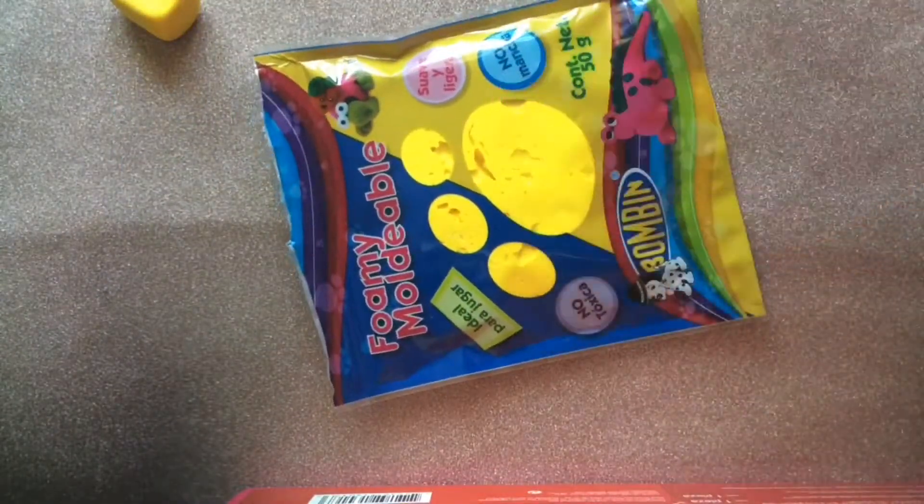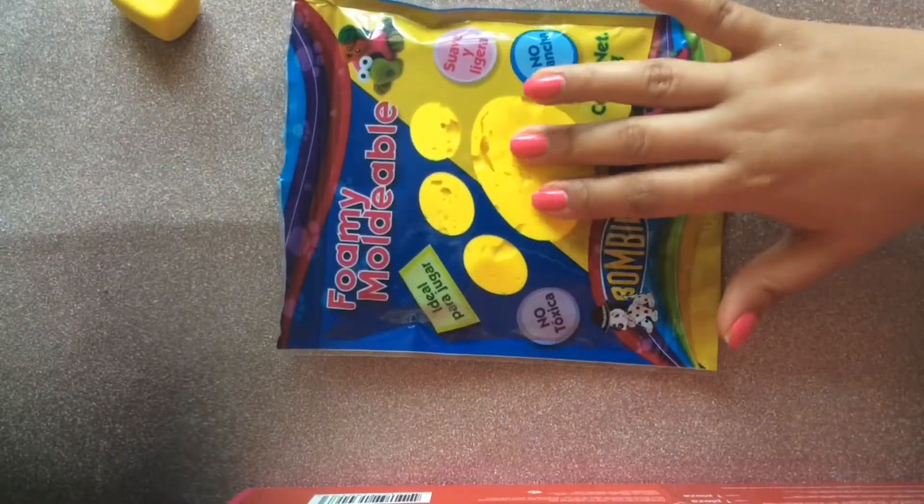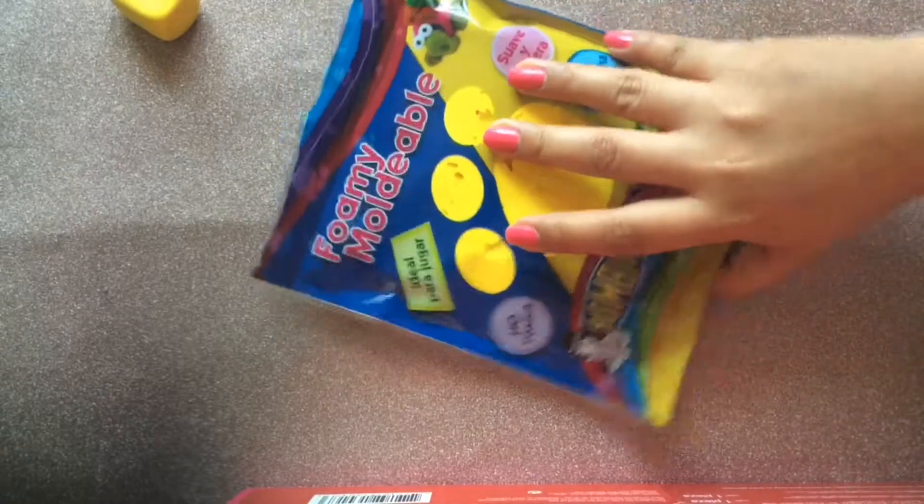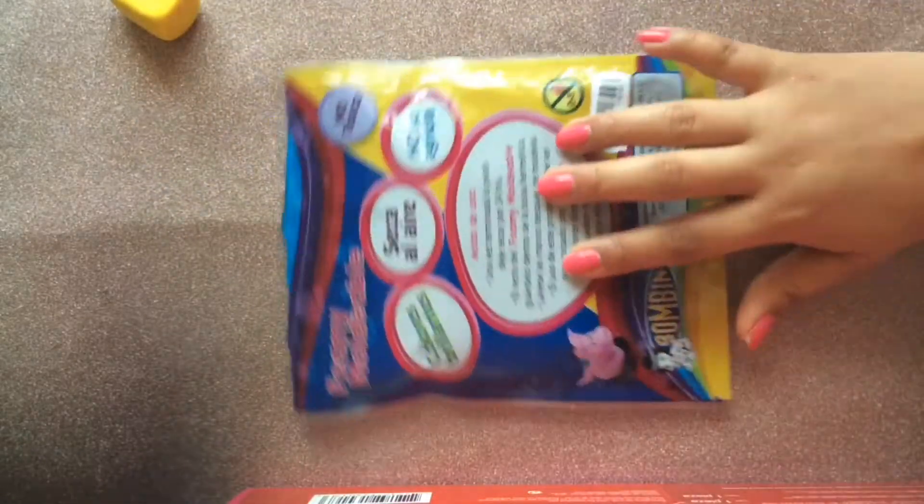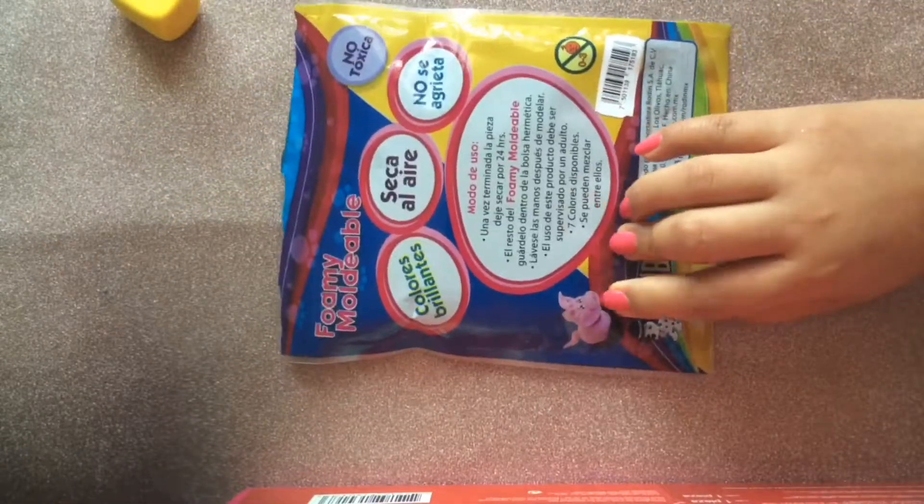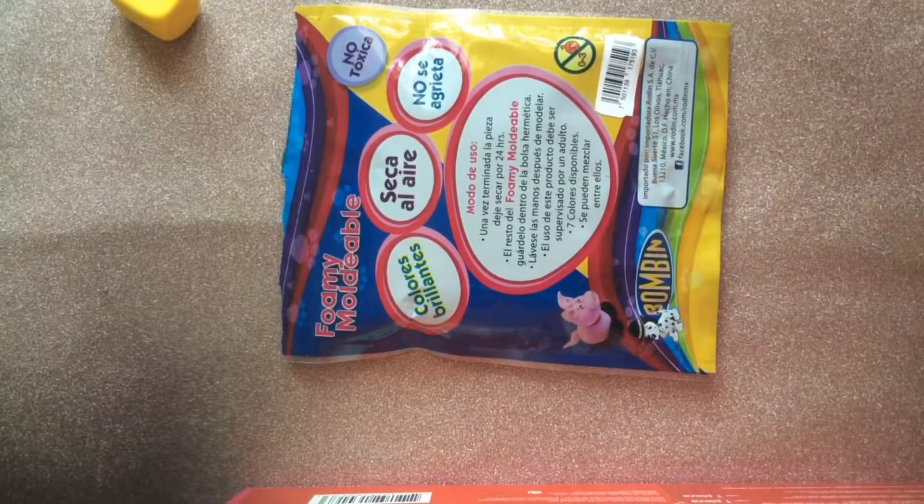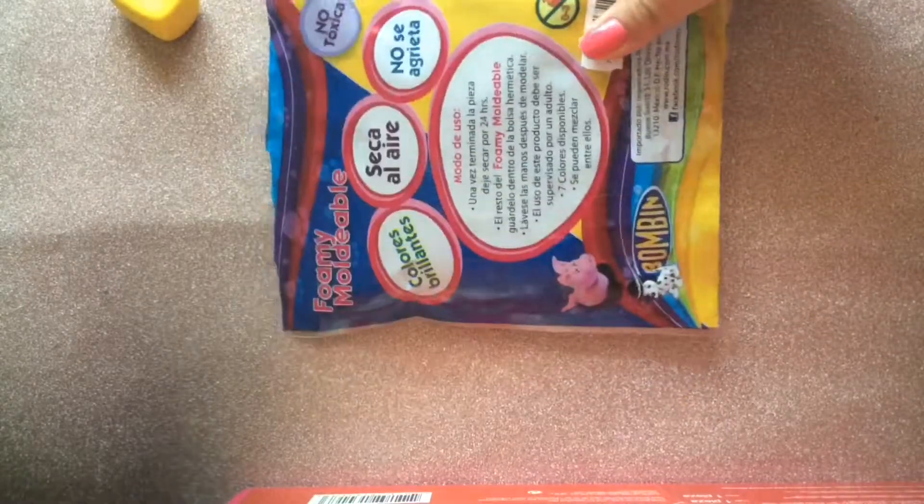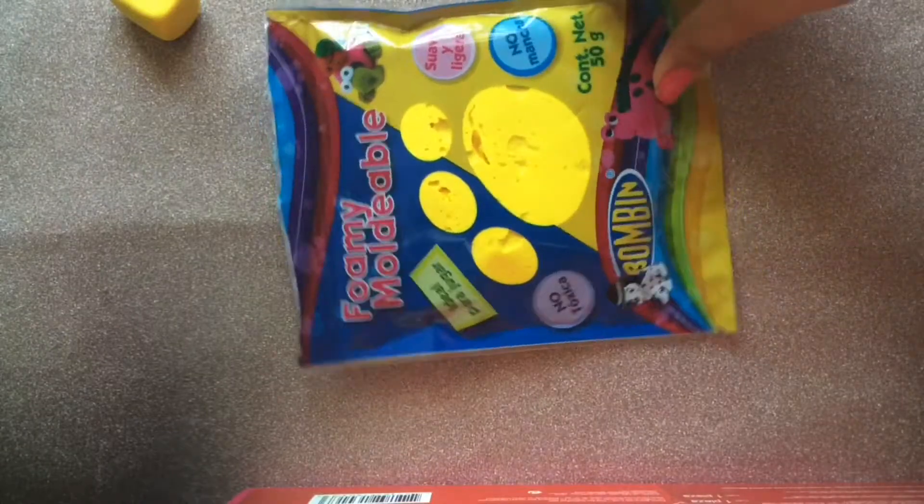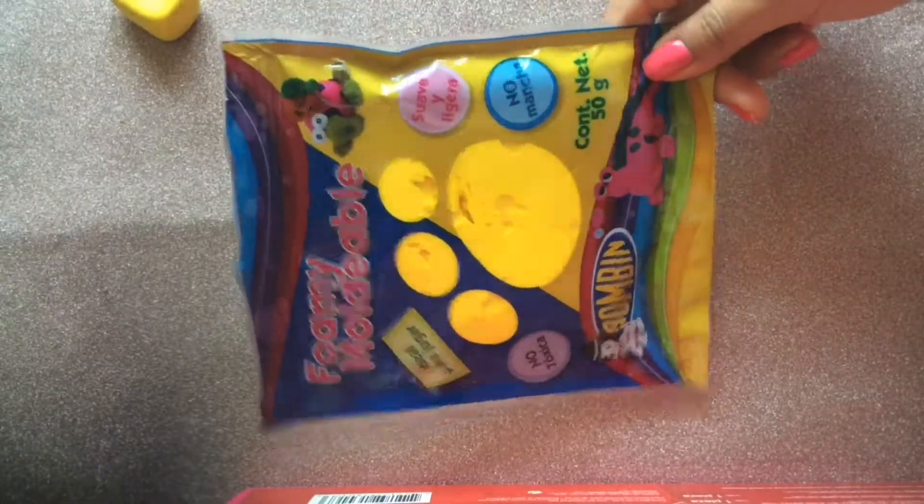I think in the US it's called Eva foam, and this is in a clay form. When it gets dry it becomes like a foam, like a squishy foam, and I'm gonna show you today five different uses that I found that I think are really interesting for this clay.